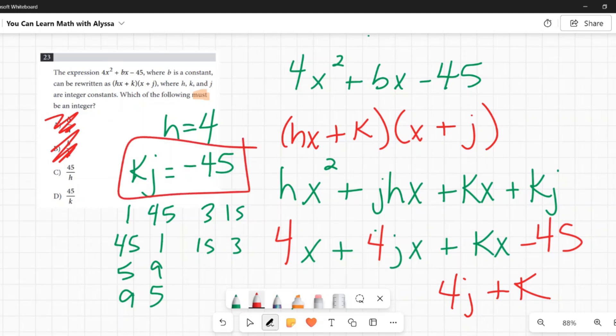As you probably guessed here, k times j equaling negative 45. Look at our c and d. 45 divided by h or 45 divided by k must be an integer. First, 45 divided by h. Well, we know h is 4. So we can eliminate this one without even doing any hypotheticals, because we know 45 divided by 4 is not an integer. We don't even have to think about the logic of why it must be true. This only leaves d. This one better be right. Hopefully our logic has worked.